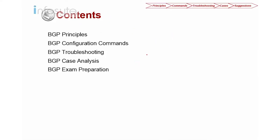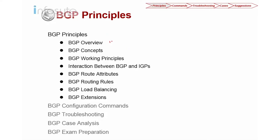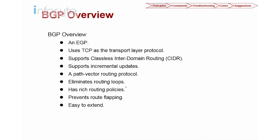Let's look into the content. First we are going to look into the principle, which includes the BGP overview, the BGP concept, the BGP working principle, the interaction between BGP and IGP, the attributes on BGP — because in BGP we have very rich attributes. We'll look into the routing rules on BGP, because BGP on Huawei the selection is quite different compared to other vendors. Then we look into load balancing, and finally how we can extend BGP.